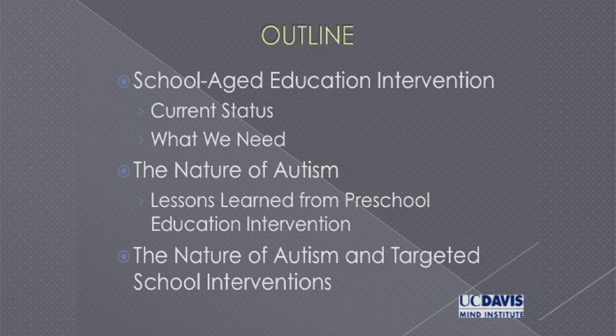In order to understand intervention — and I'm going to show you how this is almost built into federal law — you really need to know the nature of the problems that are inhibiting learning in the child. So we're going to talk about the nature of problems that inhibit learning in children with autism today. We've learned a lot from the study of younger children, and then I'll try to flip that over into describing how we can use that same understanding to better serve older children.